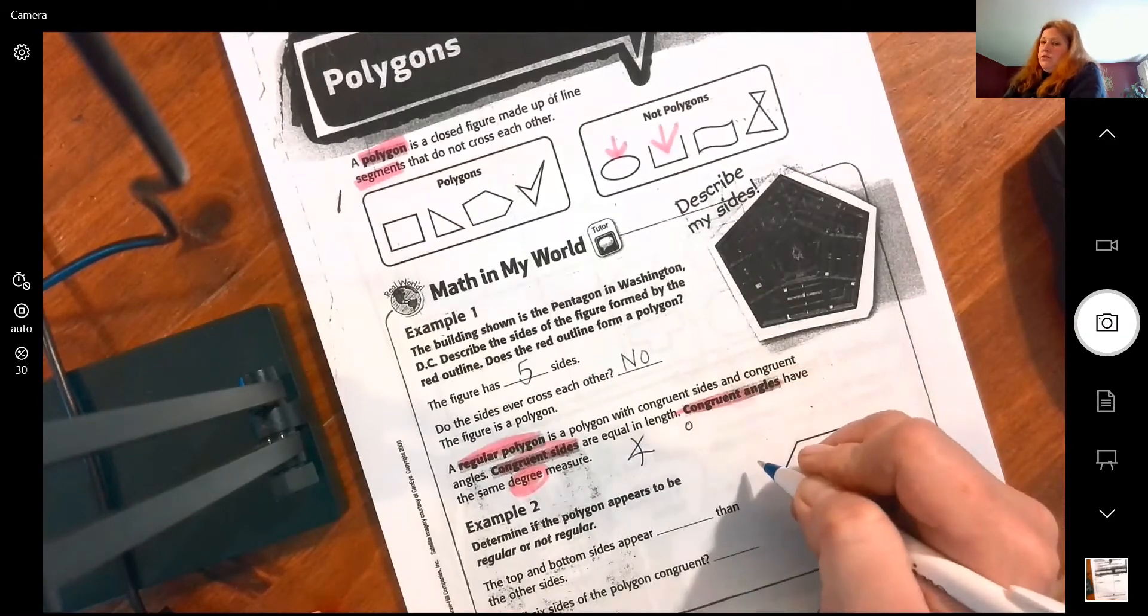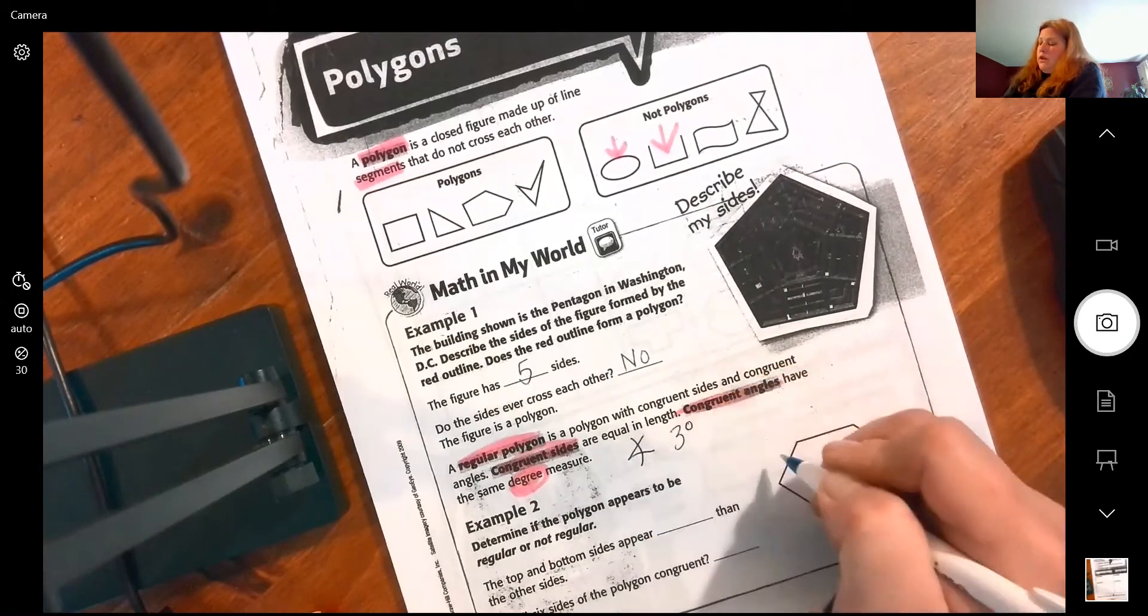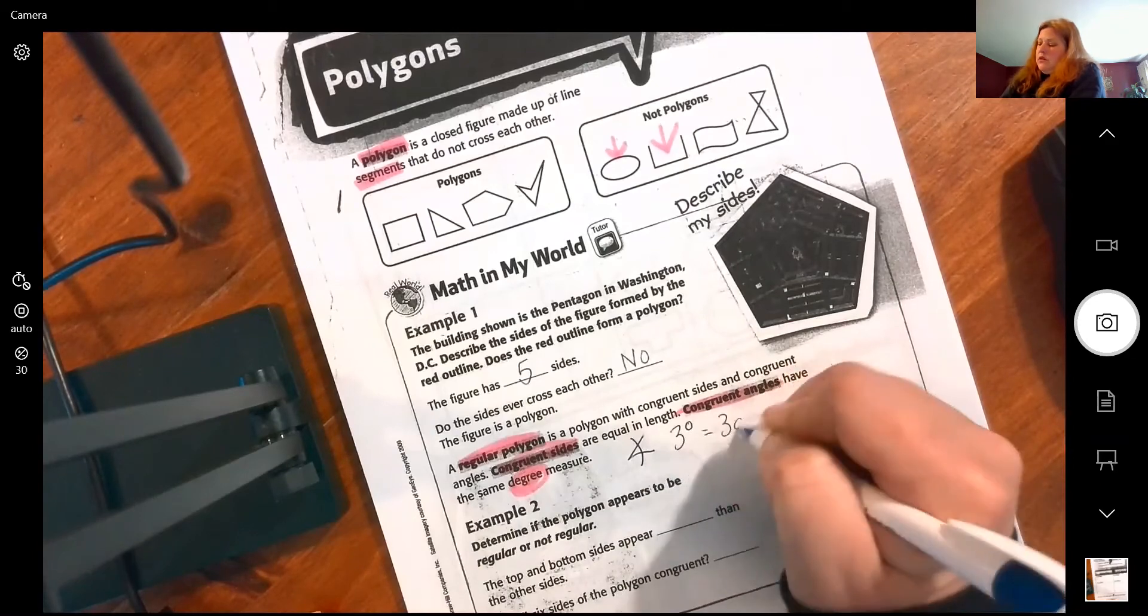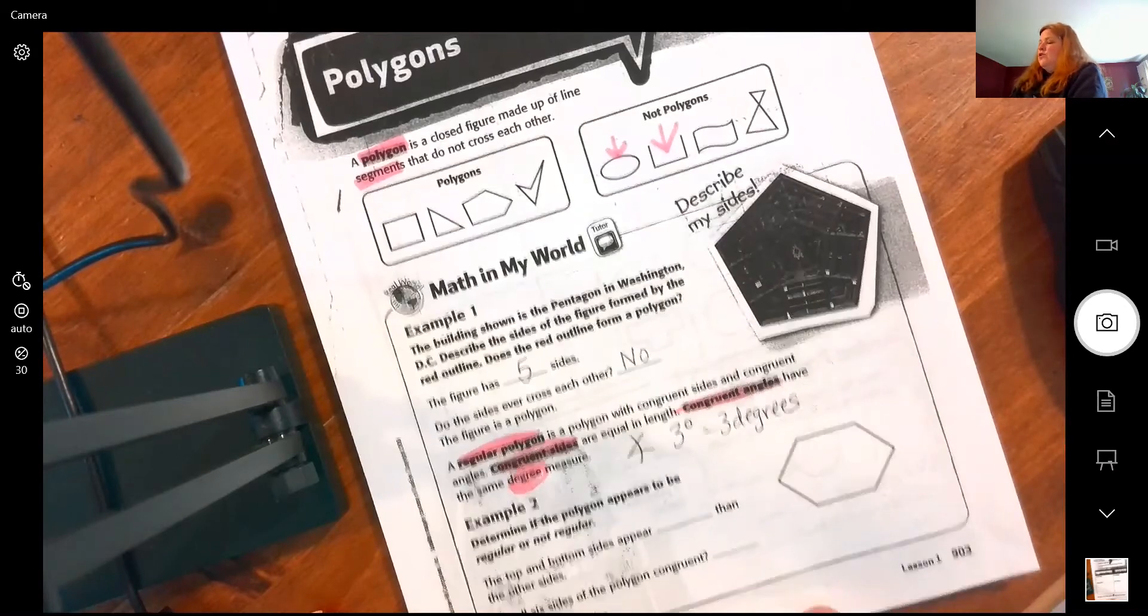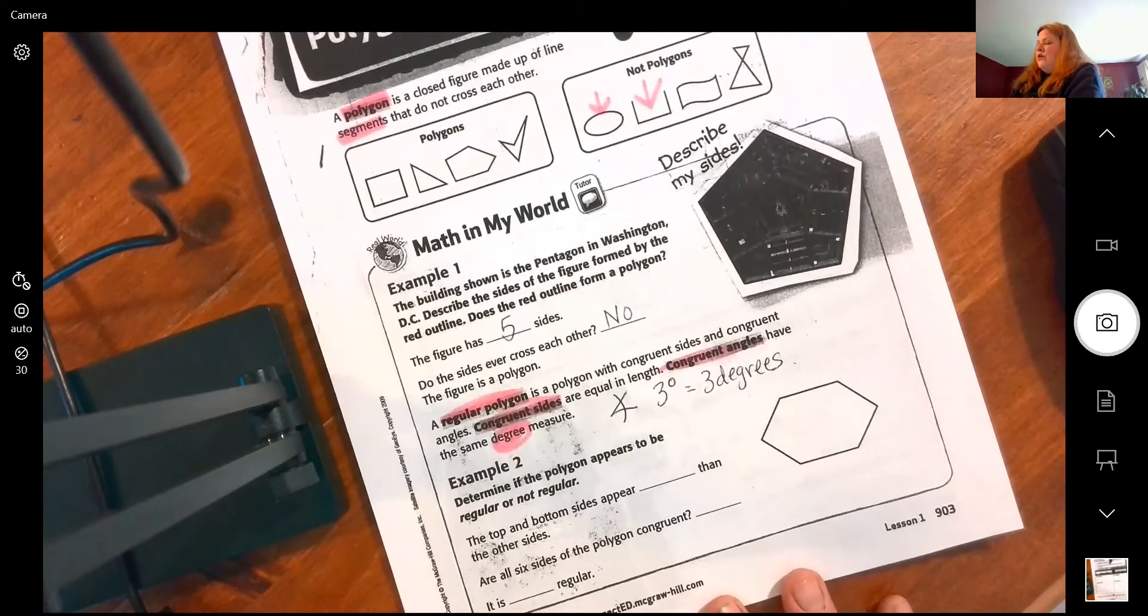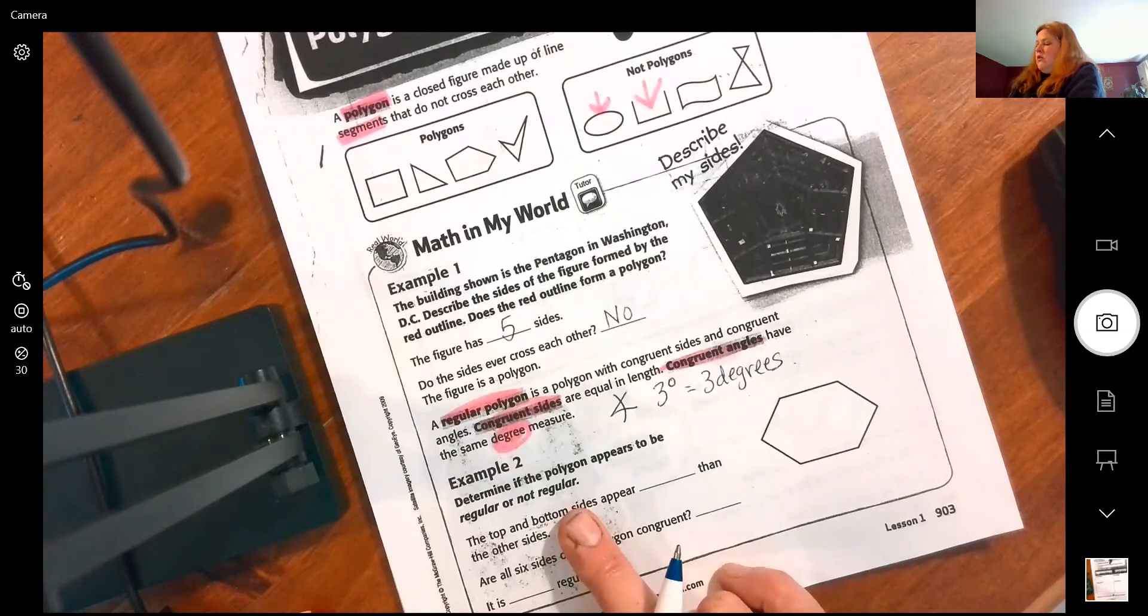Remember, if it's three degrees we'd write it like that. We've practiced this before at other times. All right, determine if the polygon appears to be regular or not regular. So we have same sides but different sides.